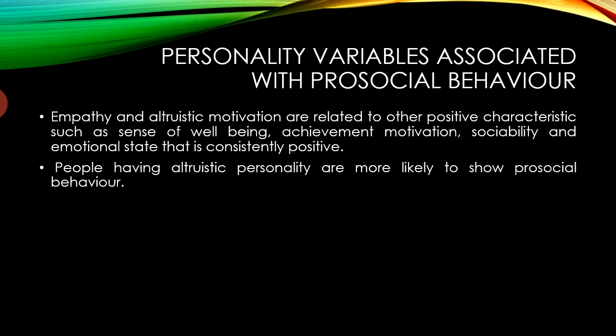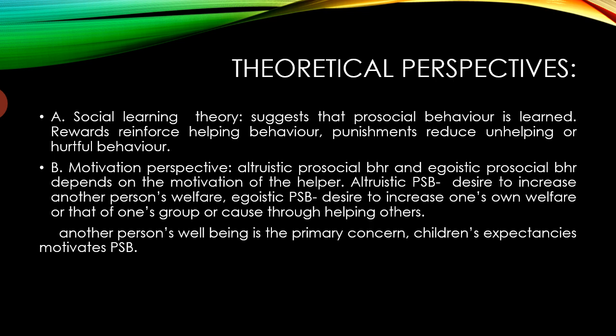Some other personality variables associated with pro-social behavior include achievement motivation and sense of well-being. People with an altruistic personality are more likely to show pro-social behavior. The first theoretical perspective is social learning theory, which suggests that pro-social behavior is learned. Rewards reinforce helping behavior and punishment reduces hurtful behavior. Observing role models who are loved or respected — such as parents or authorities — engaged in pro-social behavior demonstrates how people can and should behave pro-socially.